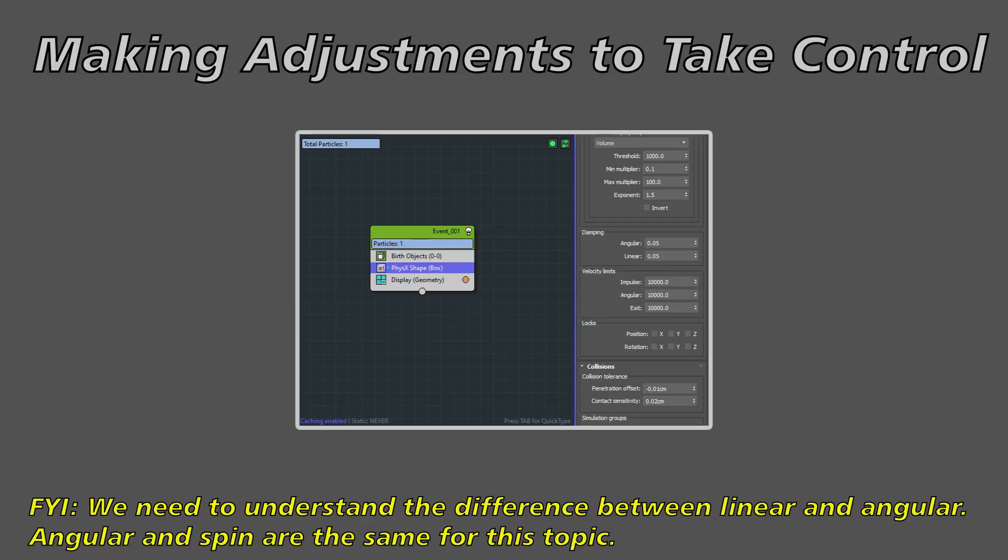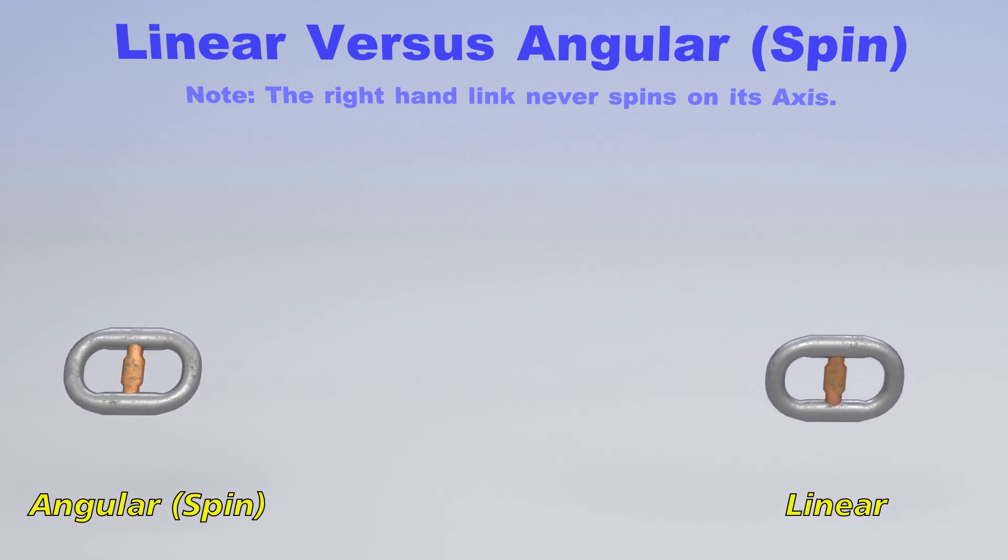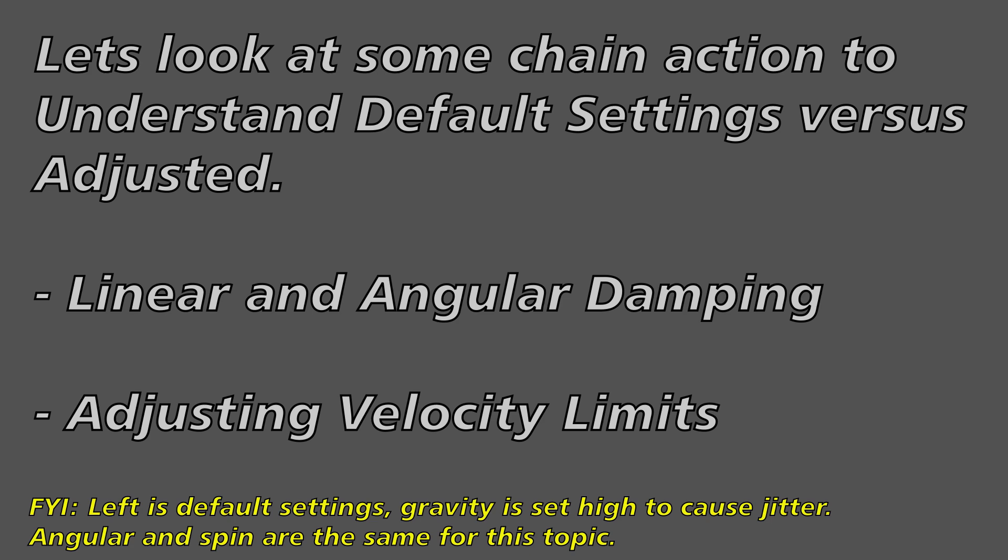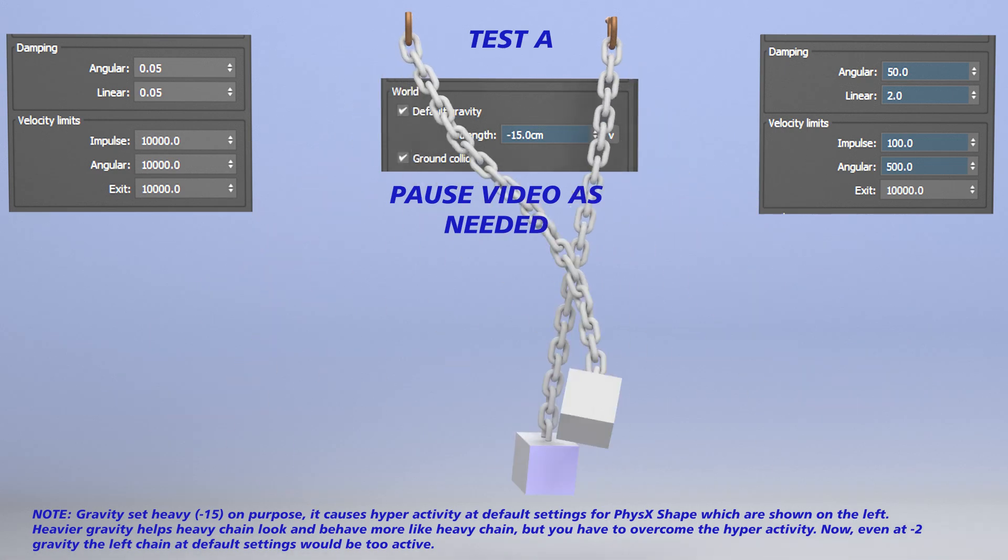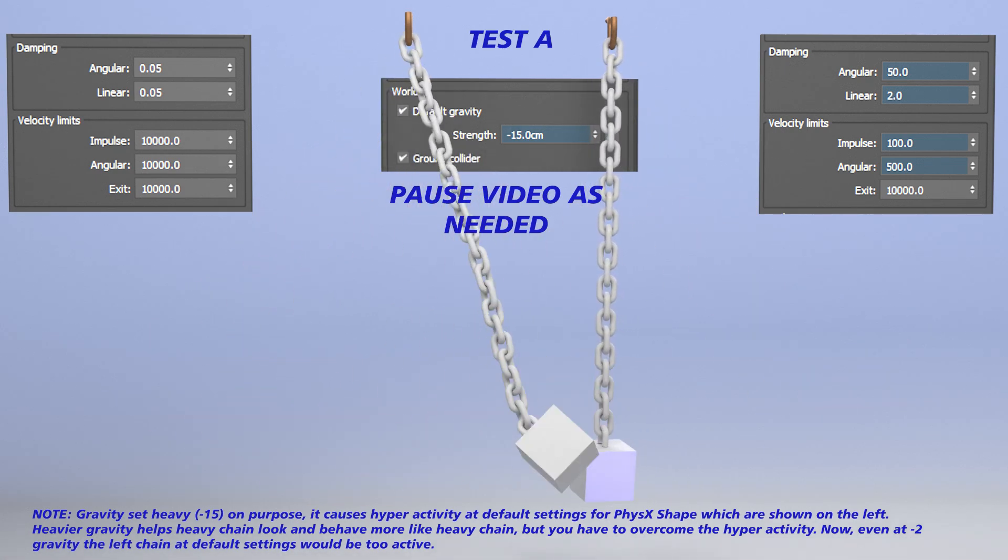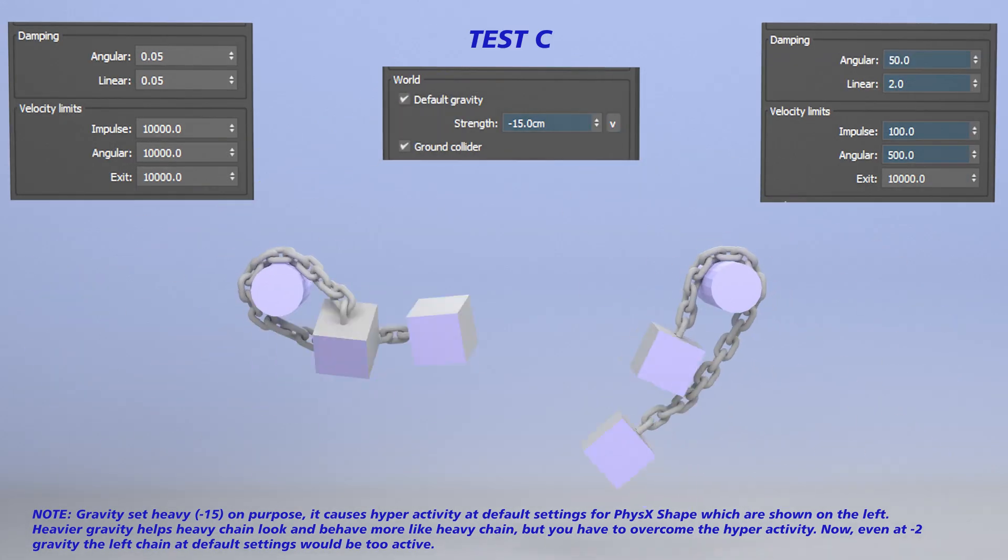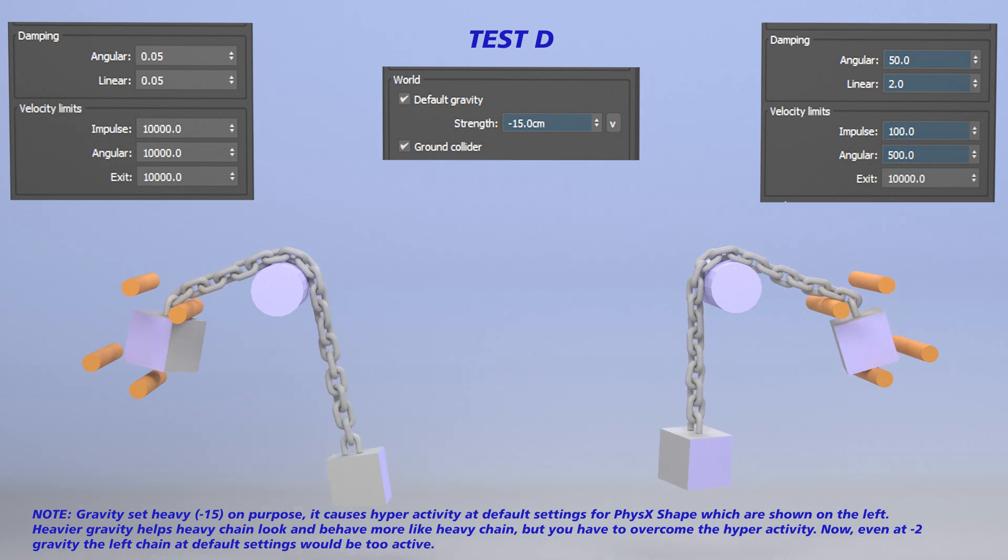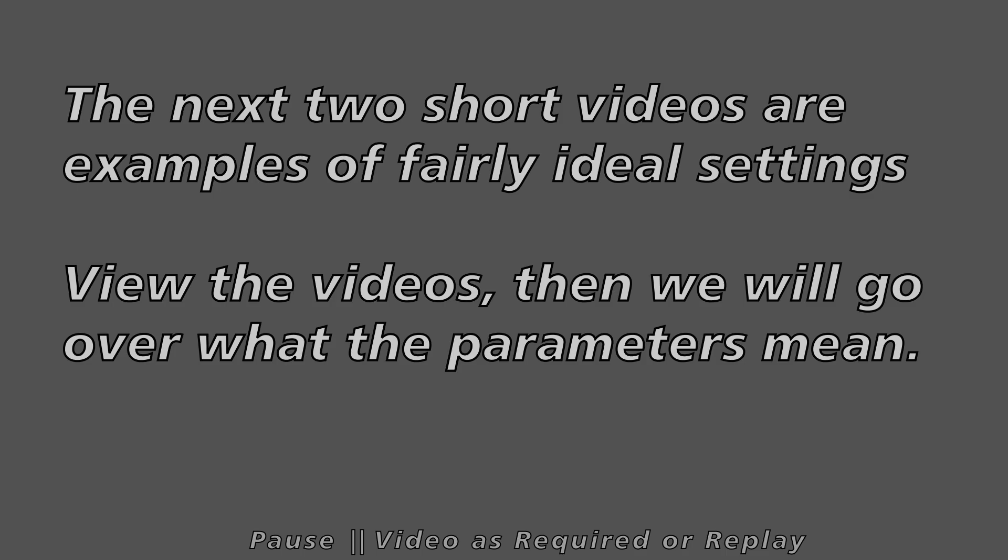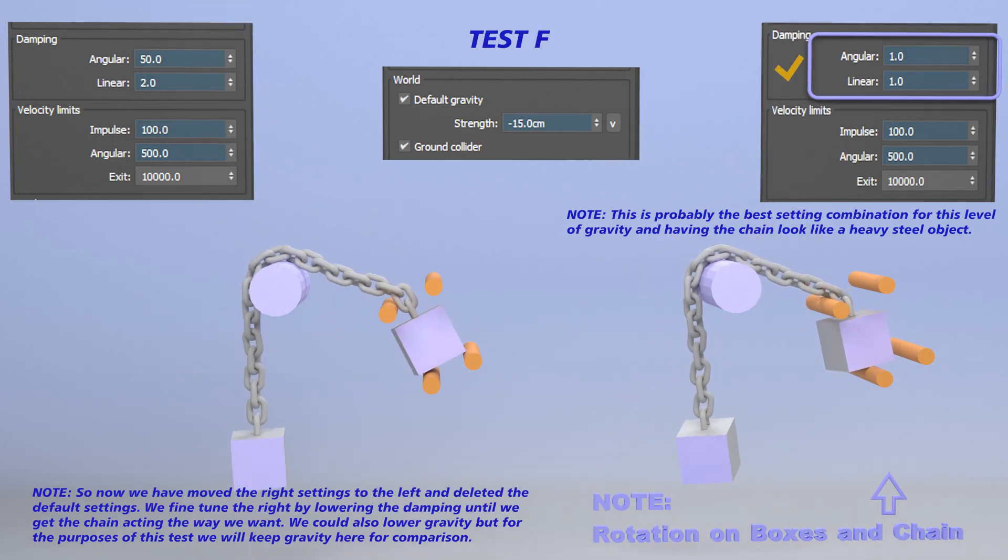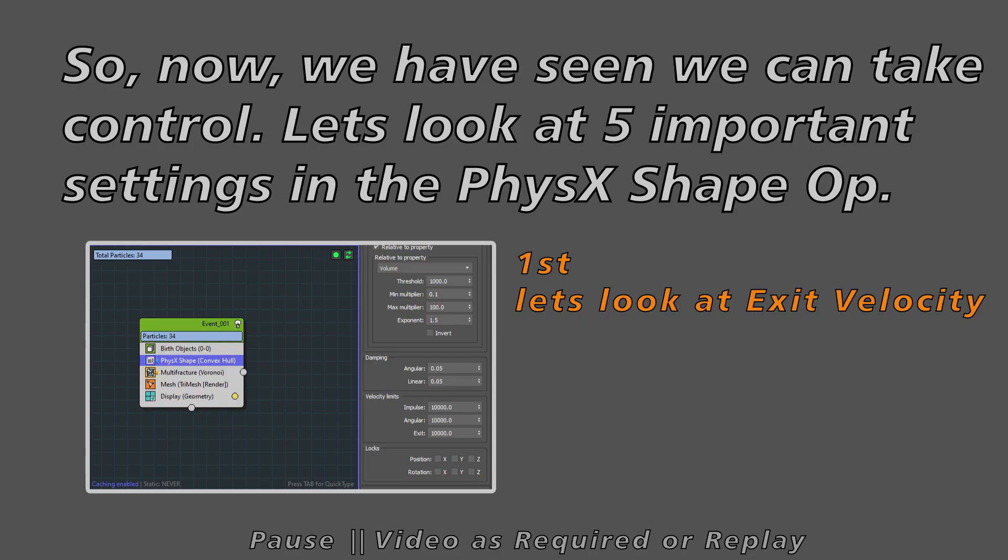So now we're going to look at making some adjustments. First we need to understand angular and linear motion because that's when we make the angular and linear adjustments. And here we're going to look at four different videos of chain activity. I've got the gravity set high because that introduces this over exaggerated motion. But we can control this stuff and some of the most effective settings are the dampening and the velocity limits. But you really need to understand them a little bit to be able to adjust them effectively.